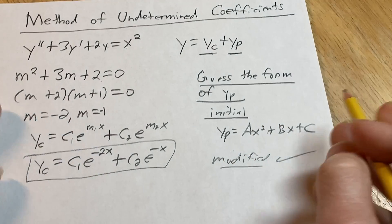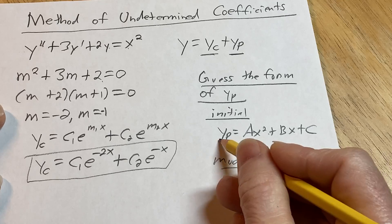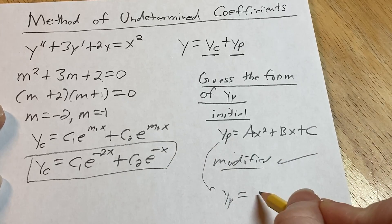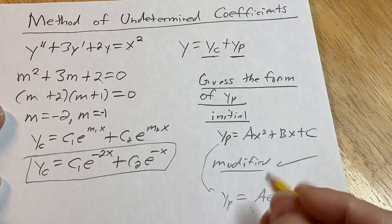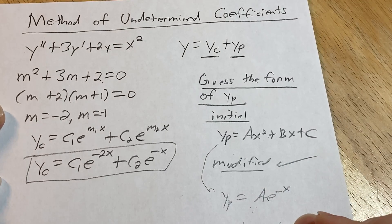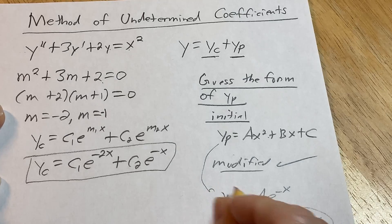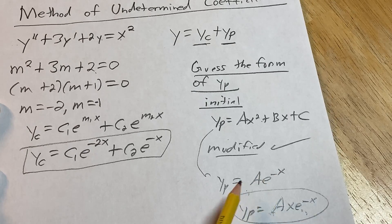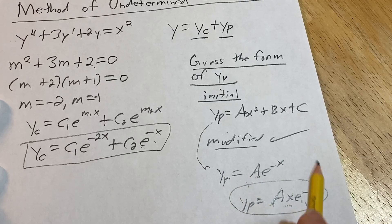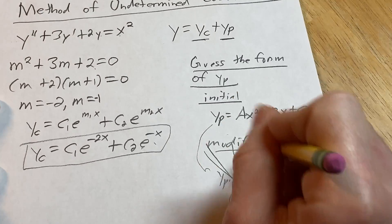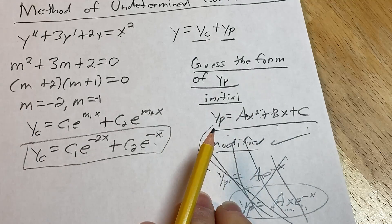Sometimes you have to modify the guess. For example, if the right-hand side gave an initial guess of y sub p equals a e to the negative x, you'd compare it to the complementary function and see repetition — so you'd multiply by x to create linear independence. But that didn't happen here; our quadratic guess stands as-is.